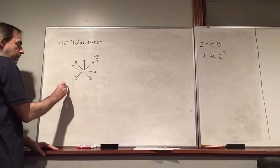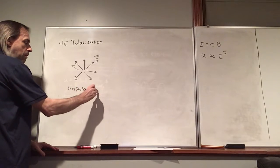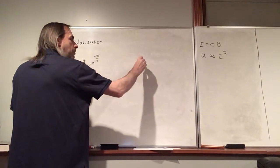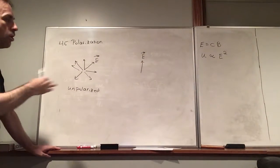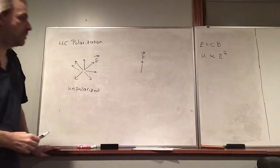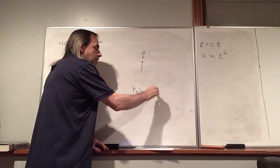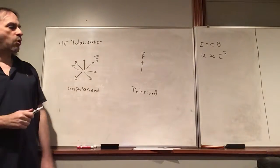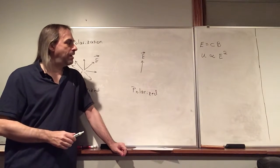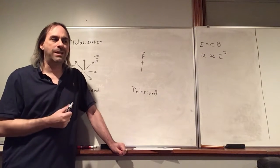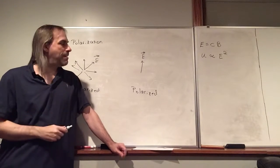This is unpolarized light. Polarized light means all the light is oriented the same direction — all the waves coming towards you are oriented in the same direction. There are a lot of ways to polarize light; something from a normal incandescent light bulb is totally random. We're going to focus on polarizing light by shining it through some semi-transparent medium.